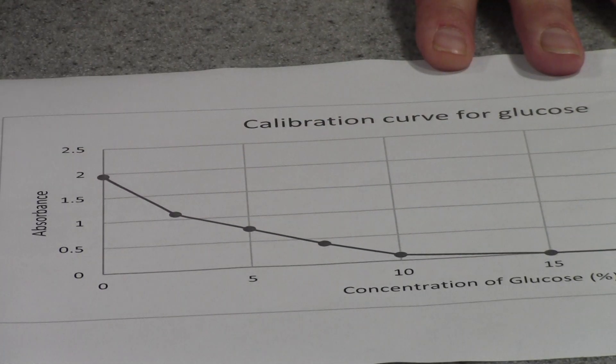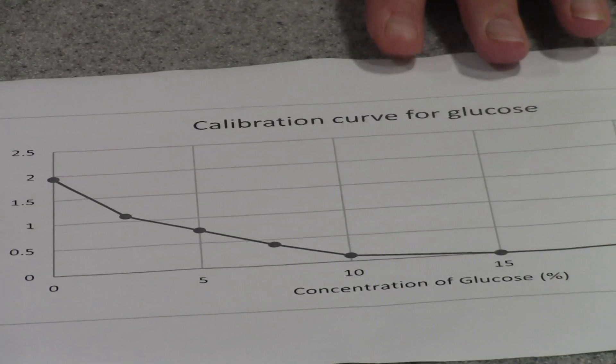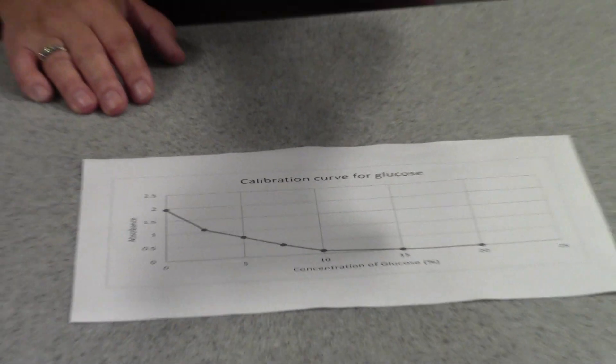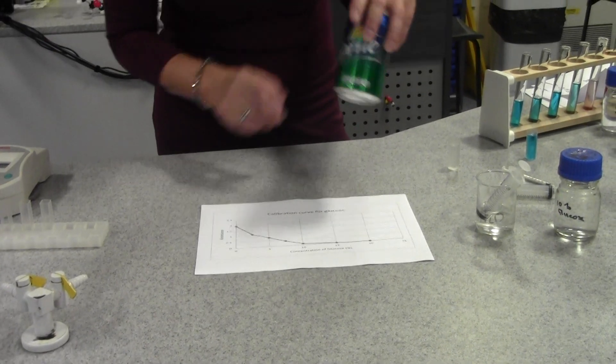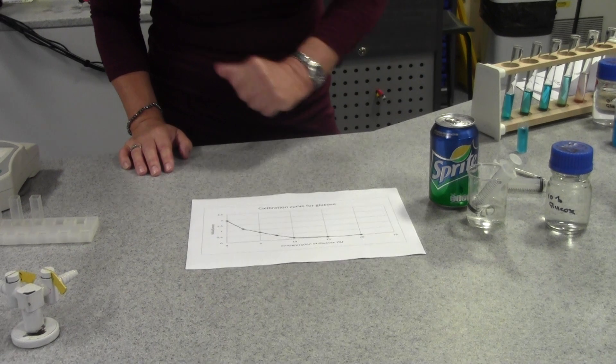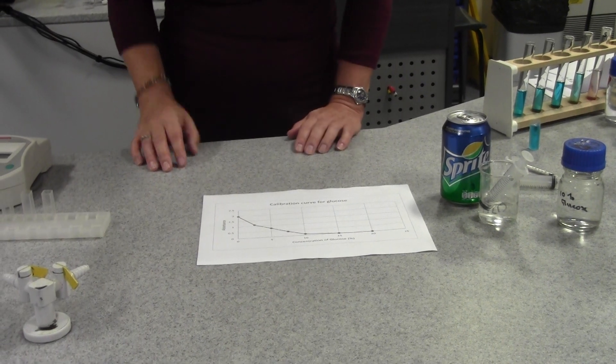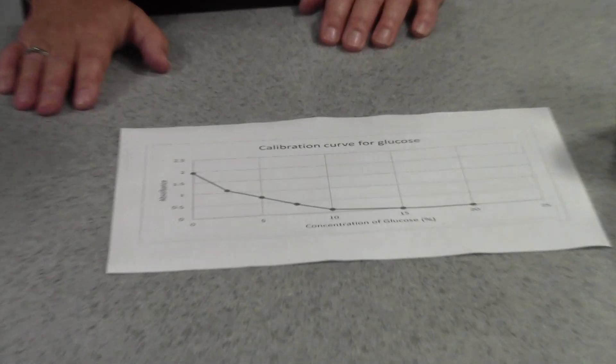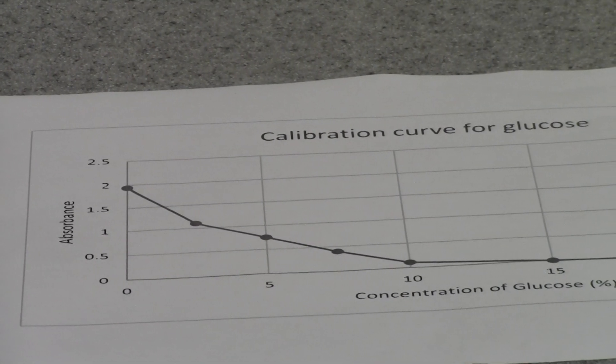Now then, I'm also going to test the filtrate from the fizzy drink—you can use anything: a sports drink, lemonade, Sprite. When I did this, I found out that the absorbance of red light was 1.75.